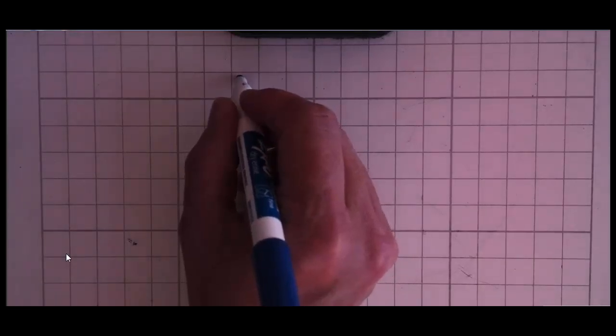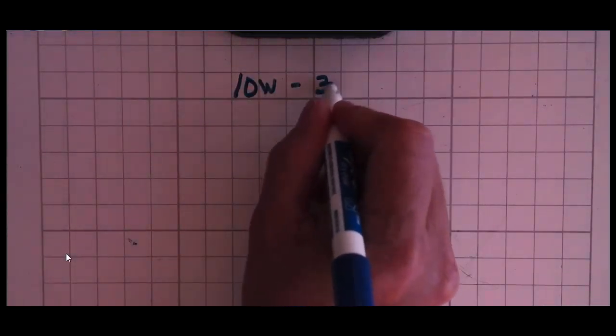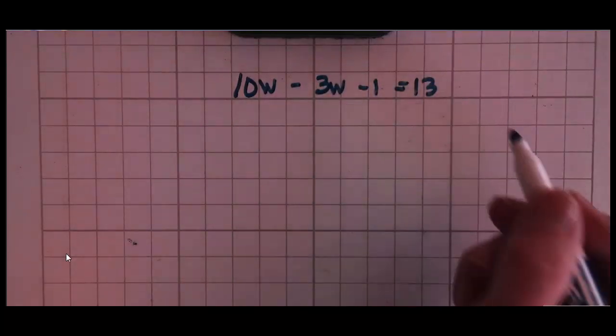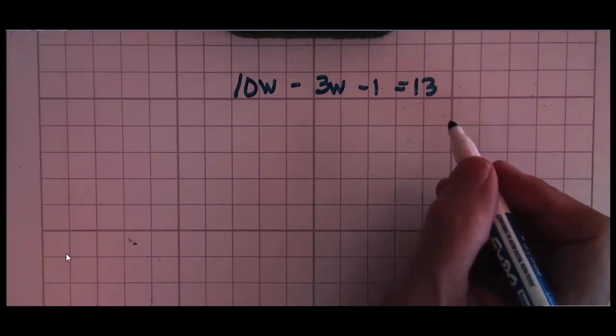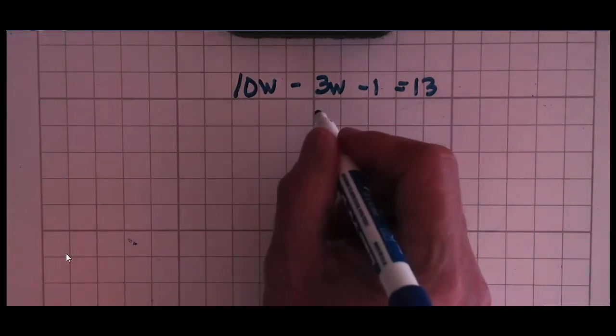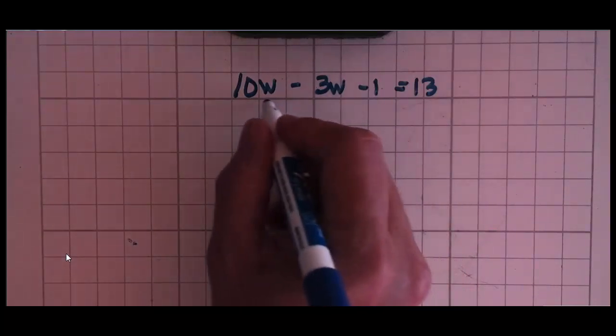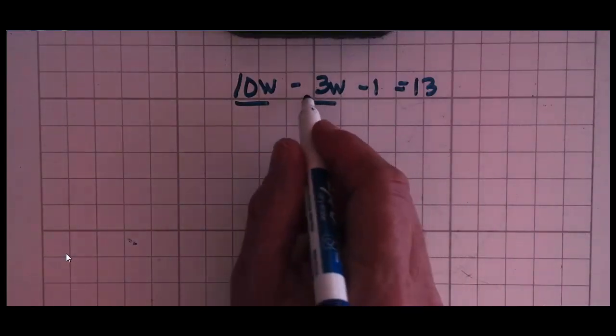Let's do an example: 10w - 3w - 1 = 13. When they say advanced linear equations, that means you usually have to do more than the usual. In this case, we have to combine like terms. We're going to combine our 10w with our negative 3w, remembering of course that the sign stays with the number.